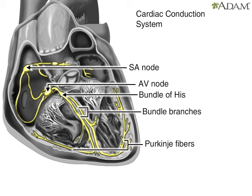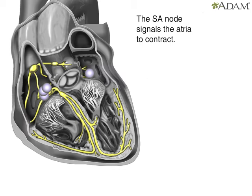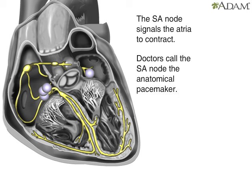Let's follow a signal through the contraction process. The SA node starts the sequence by causing the atrial muscles to contract. That's why doctors sometimes call it the anatomical pacemaker. Next,